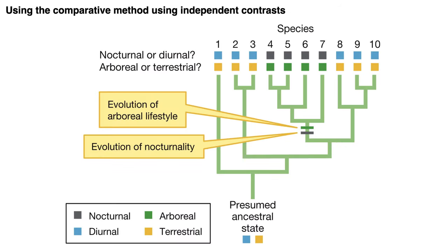One last concept is that not every character is independent of the others. When using the comparative method across species to view the evolution of characters, some taxa will have more characters in common just because they are closely related to one another and because those characters are functionally related to one another. The method of phylogenetic independent contrasts allows us to account for similarity that is due to common ancestry alone, rather than assuming that every trait change is independent of every other change on a data matrix.